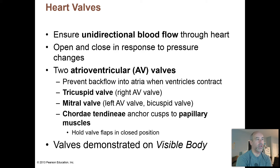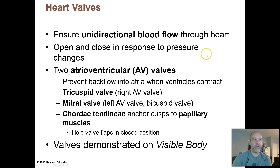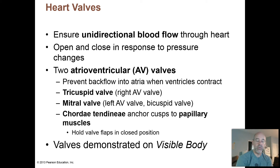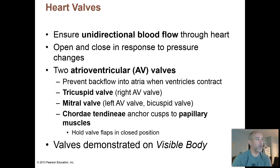If you didn't have these valves, blood would flow backwards from the ventricles back into the atria if there were no way to close that opening. Your AV valves close when the ventricles contract. When the ventricles contract, you want blood to flow up into the pulmonary trunk from the right side or into the aorta from the left side.